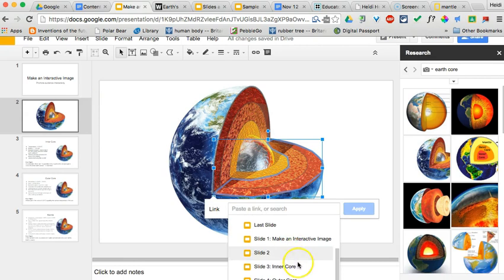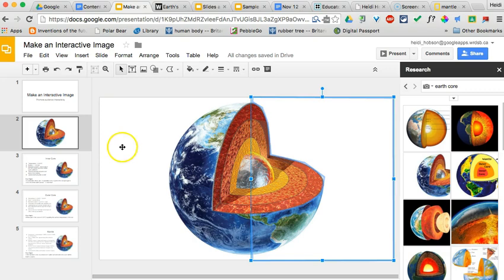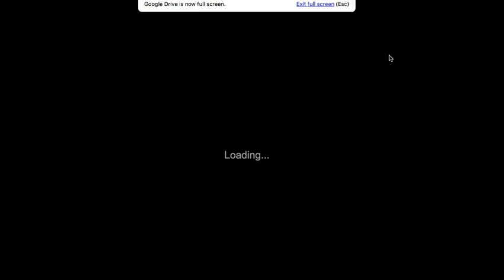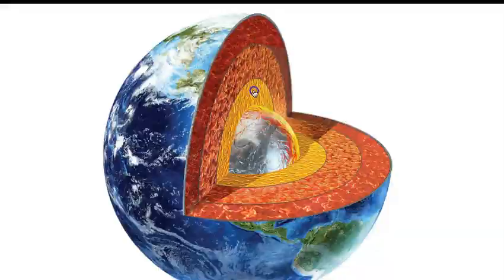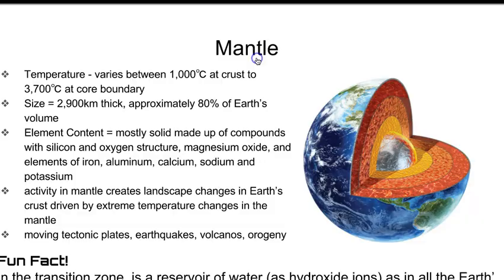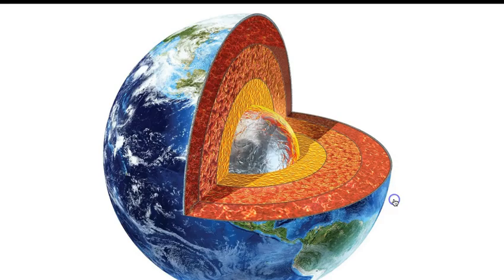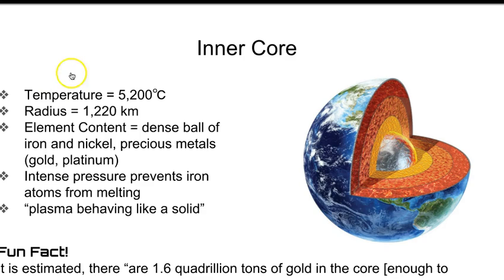If we did everything correctly, when we go to present, the interactive image should link to the appropriate slide. Clicking on the inner core goes to the inner core slide; clicking on any text stays on that slide; clicking the image takes you back to the main image. Clicking the outer core takes you to the outer core slide; clicking the image returns to master. Clicking the mantle takes you to the mantle slide, and clicking either side of the mantle returns to master. Clicking the background areas does not advance the slide. That's how you create an interactive slideshow — thanks for watching!